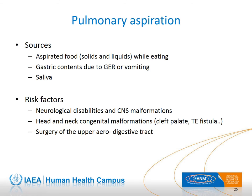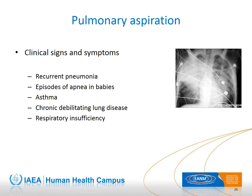Aspiration is more commonly seen in the presence of risk factors such as congenital or acquired neurological disabilities affecting the swallowing mechanism, congenital malformations of the head and neck — a typical example being cleft palate or tracheoesophageal fistula — and surgery of the upper airways or upper digestive tract. Pulmonary aspiration may present as recurrent pneumonia at any age, episodes of apnea and apparent life-threatening events in young babies, and asthma in older children. Repeated aspirations lead to chronic debilitating lung disease and respiratory insufficiency.